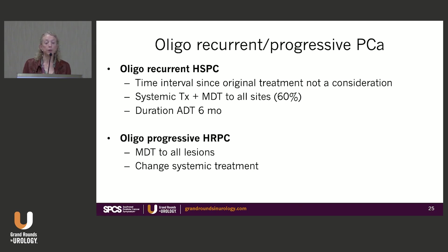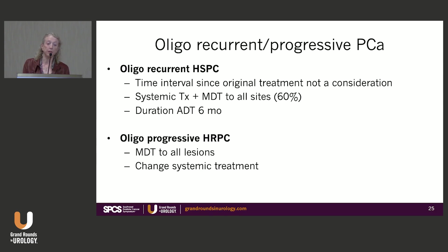For oligo-recurrent hormone-sensitive prostate cancer, the time interval since original treatment was not a consideration. They recommended systemic treatment plus metastasis-directed therapy to all sites, with androgen deprivation of at least six months. For oligo-progressive hormone-resistant prostate cancer, metastasis-directed therapy to all lesions was recommended along with a change in systemic treatment.